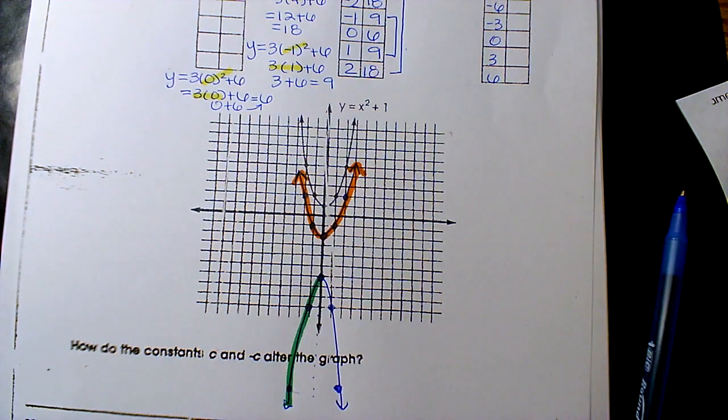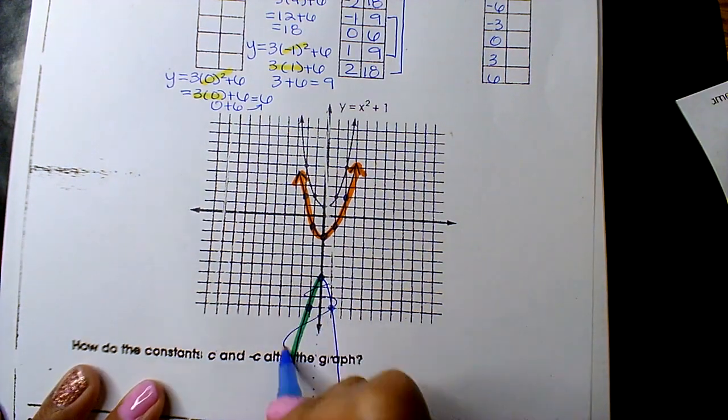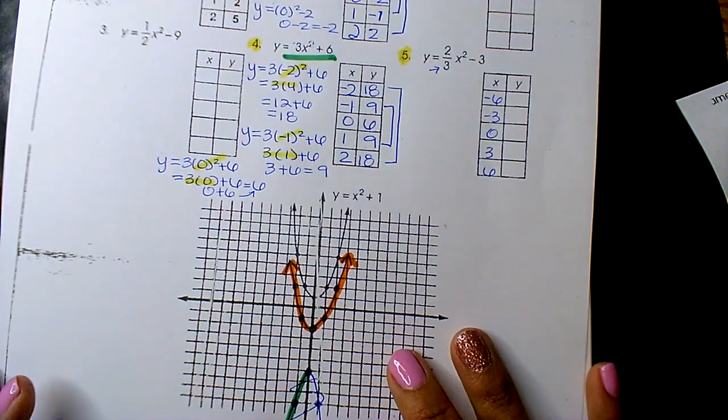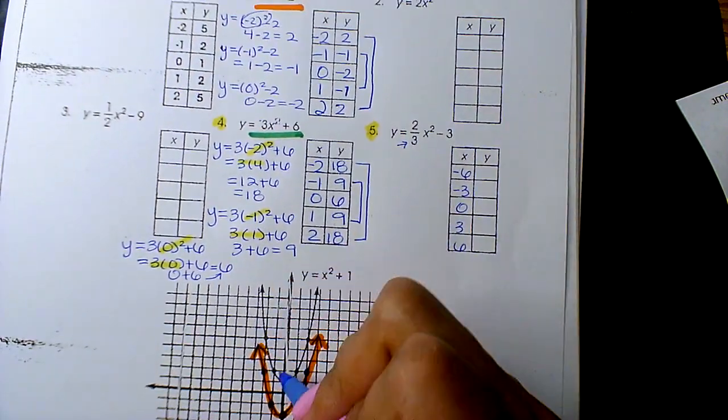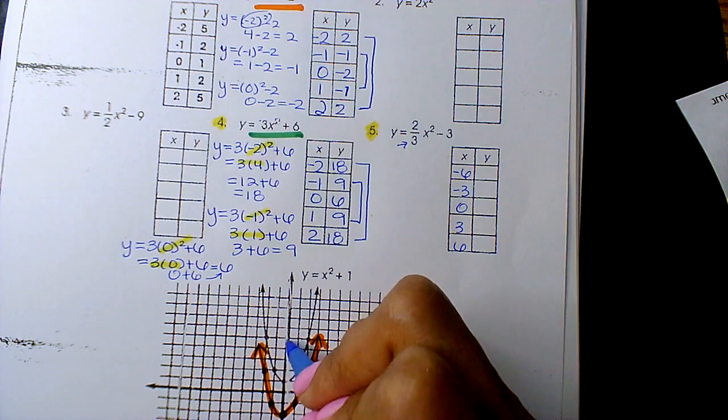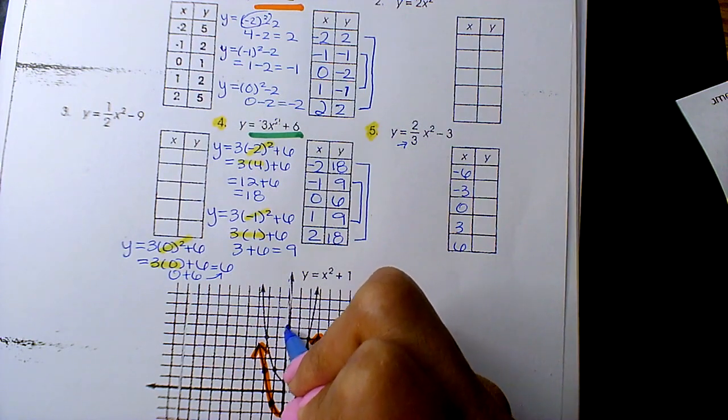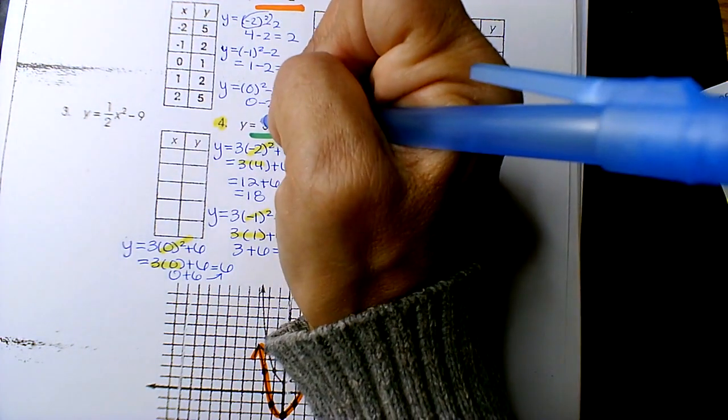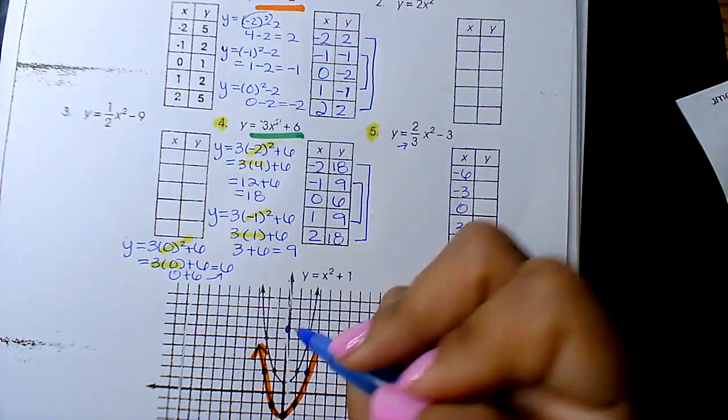You guys, why did I go down 18? Has anyone ever noticed that? Why did I make it negative 18? I don't know why. I saw that and I was like negative for some reason.